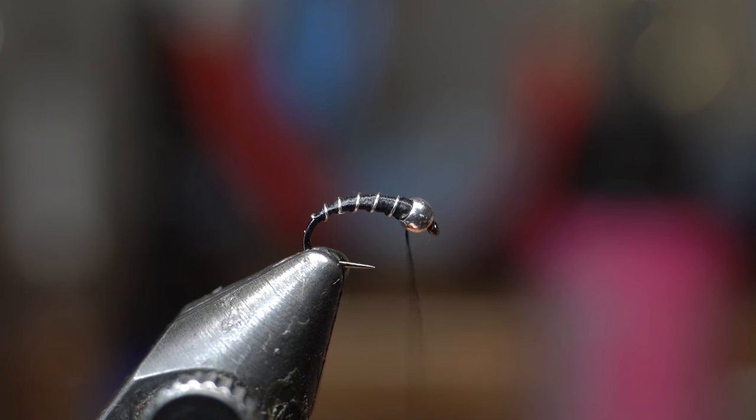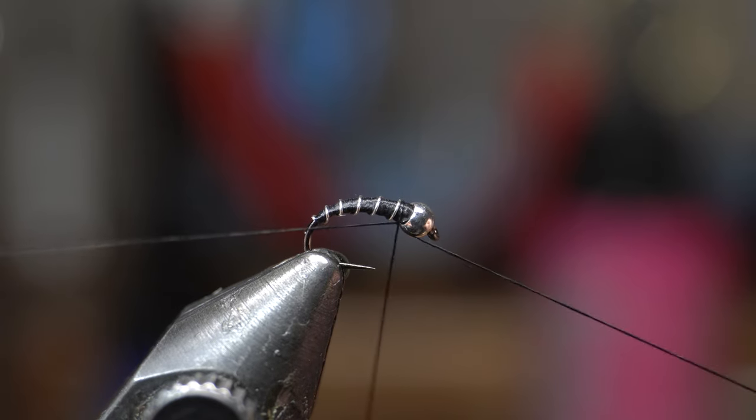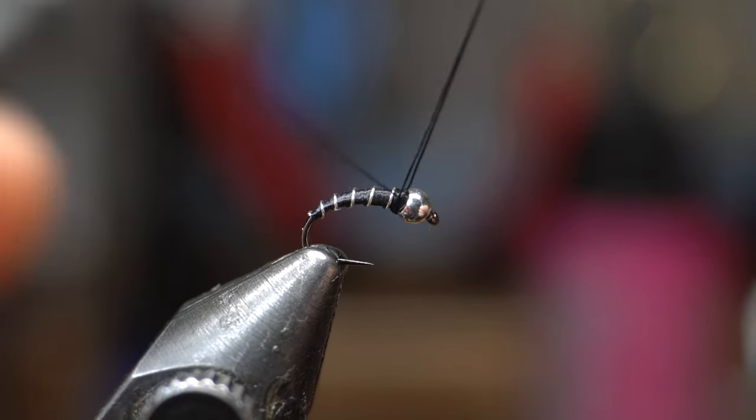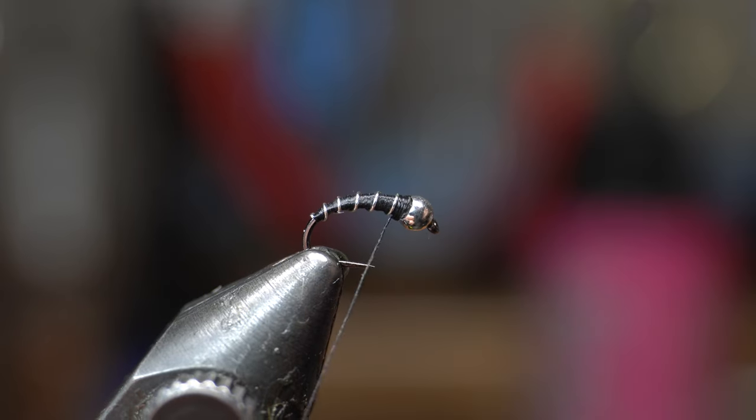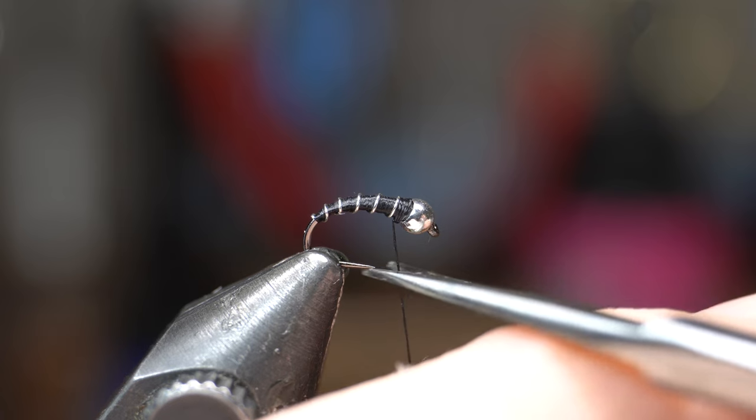Now I'm going to cord up my thread because it makes a little better whip finish. You want to wrap back to front, but you don't have a lot of room here so be careful. Three, four wraps—you don't want a lot here. Three or four is good, you can do five, but you want to cut this off close.